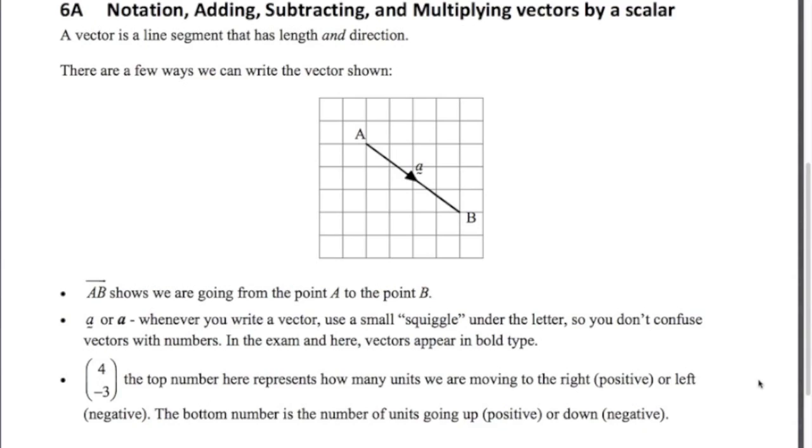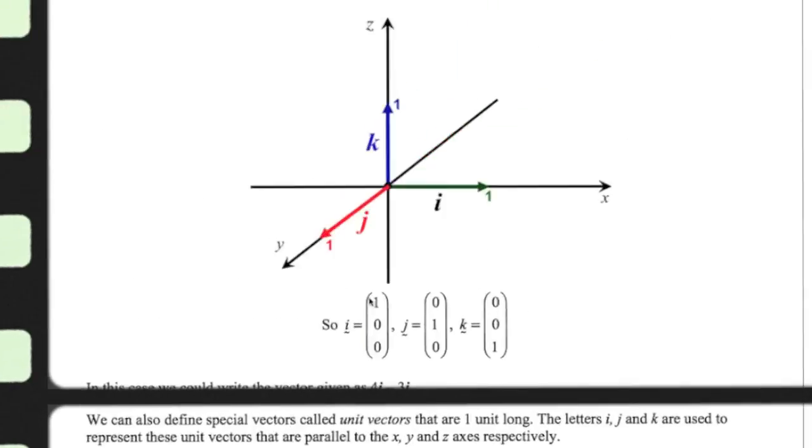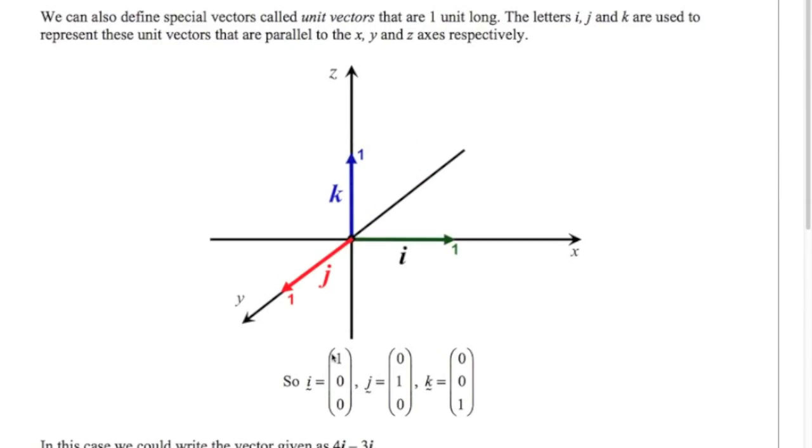So there's a few ways of writing vectors. Vectors are extremely handy when we start looking at 3 dimensional objects and shapes and getting around 3 dimensions. So it's important to define these unit vectors. We're going to talk more about what unit vectors are in the next video. But here I just want to show you the unit vectors. They are the vectors that are one unit long, parallel to the x, y, and z axes. You can see here. So the letters that we use for those unit vectors are i, j, and k.